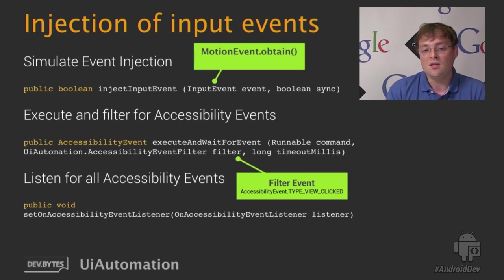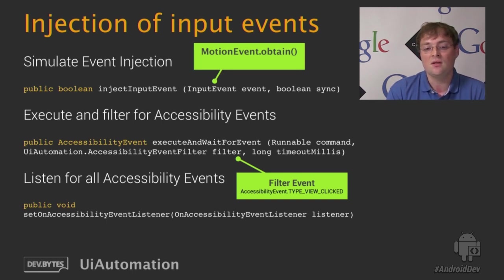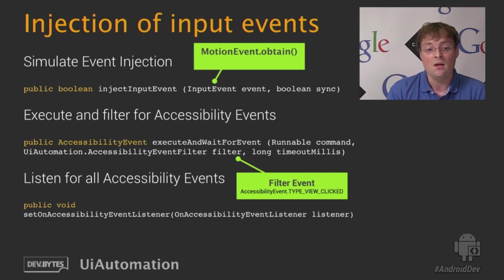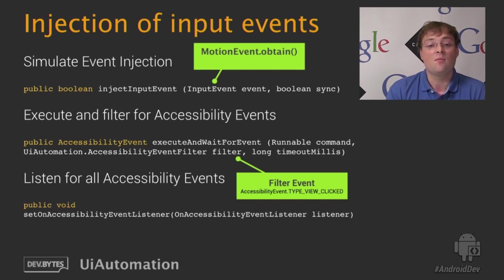Furthermore, you can execute commands and listen for their corresponding accessibility events using an accessibility event filter. For example, we can pass a Runnable as a parameter to executeAndWaitForEvent(), which taps on the screen, and then verify this tap by listening for the corresponding accessibility event. You can also listen for all accessibility events in the event stream by passing an instance of OnAccessibilityEventListener to the setOnAccessibilityEventListener() method. Your listener interface then receives a callback each time an accessibility event occurs.